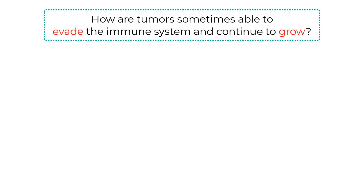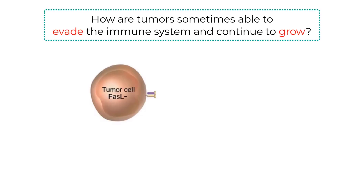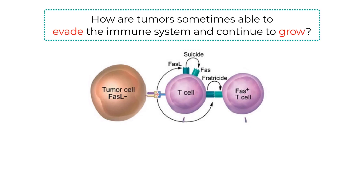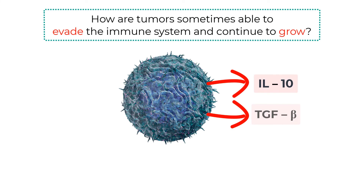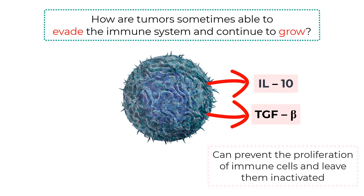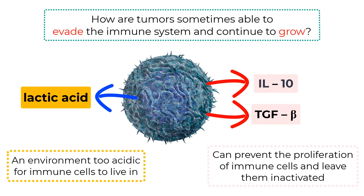How are tumors sometimes able to evade the immune system and continue to grow? Some cancer cells express the FAS ligand on the outside of their cell membranes. Thus, as T-cells and natural killer cells approach the cancer cells, it is the cancer cells that bind the FAS receptors on the immune cells — killing them by the same means the immune cells would have used. Additionally, tumors can secrete immunosuppressive cytokines such as interleukin-10 (IL-10) or transforming growth factor beta (TGF-β), which can prevent the proliferation of immune cells and leave them inactivated. Lastly, tumors can produce large amounts of lactic acid, resulting in an environment too acidic for immune cells to live in. Thus, sometimes the immune system is unable to rid the body of cancer.